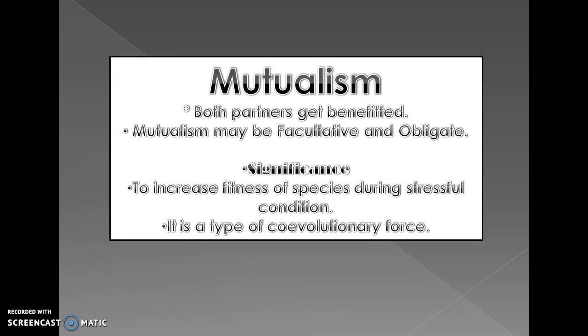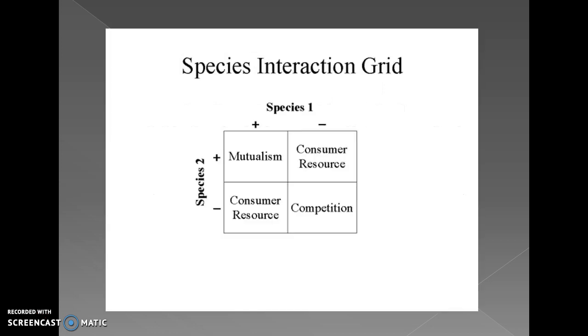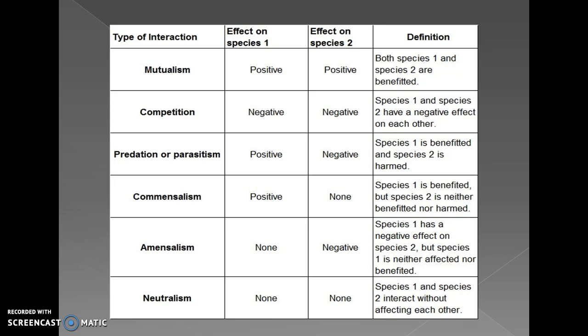Now let us come to mutualism. I want to discuss all types of interaction in detail. This video is basically just an introduction to species interaction. For detailed discussion, you can join me online. Topics include mutualism, competition — inter-specific and intra-specific — predation, parasitism, commensalism, amensalism, and neutralism. There will be many problem-solving sessions in those classes.